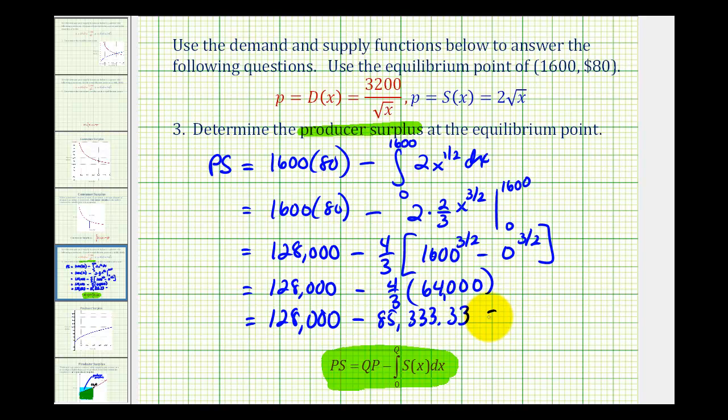So our producer surplus will be this difference, which will be 42,666 dollars and 67 cents. And again, this represents the extra revenue received from selling more items at a higher price and will contribute to their profit.